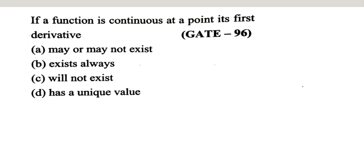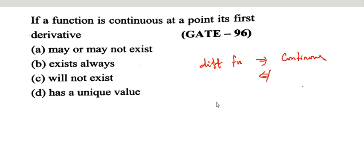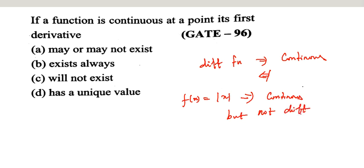Second question: if a function is continuous at a point, does it have a derivative? We know that every differentiable function is continuous. But the converse is not true — the converse need not be true. For example, |x| is continuous but not differentiable for all points.